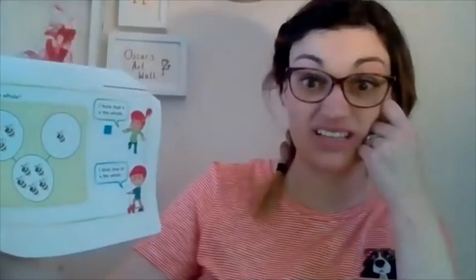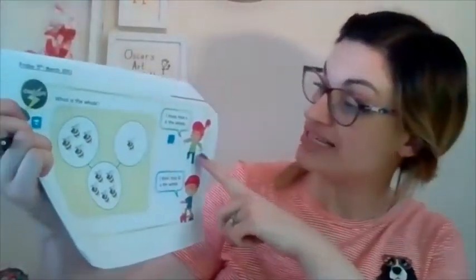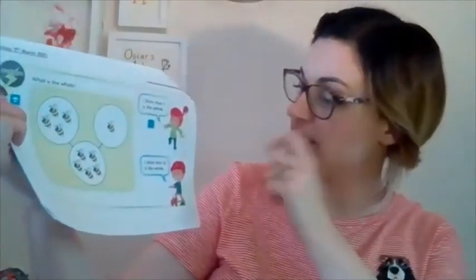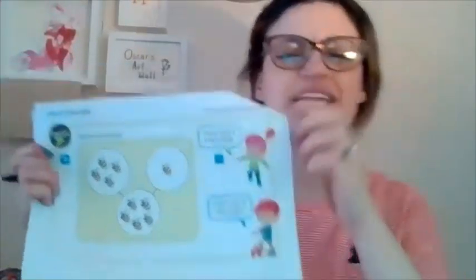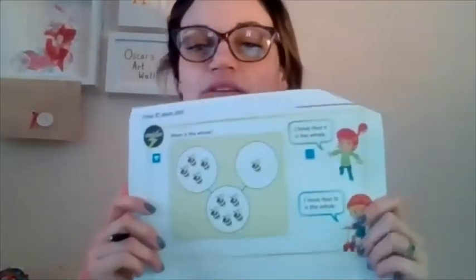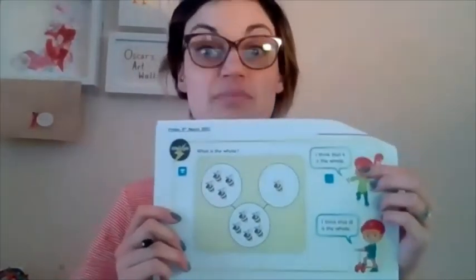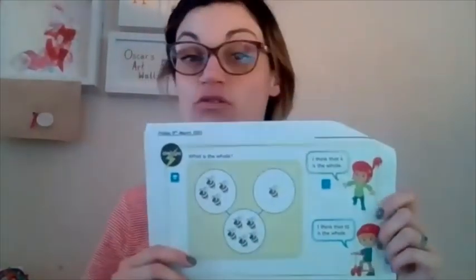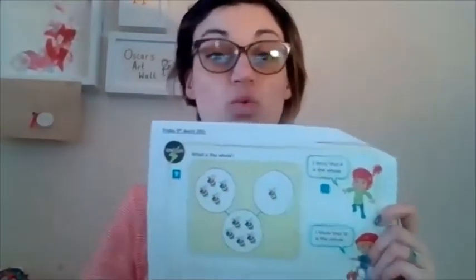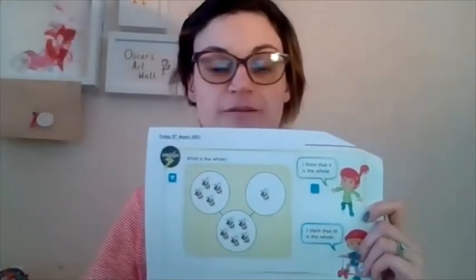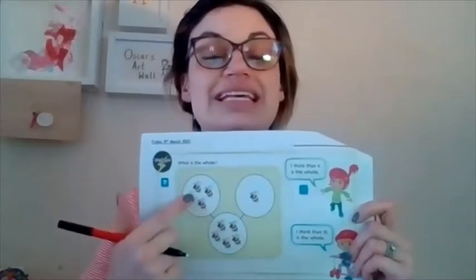Exciting, hey? So in your packs today you have got this one — they're little buzzy bees and it wants to ask you which one is the hole. Now one girl says 'I think that four is the hole,' and this boy says 'I think that ten is the hole.' Think about what these two are asking you and let me know if you think they are right or wrong. You can put a tick if you think they're right or a cross if you think they're wrong. Then have a go using your counters to work out which one is the hole and which are the two parts.